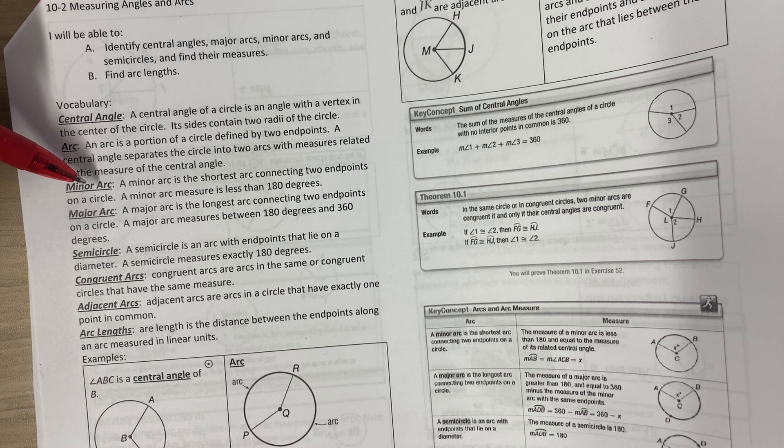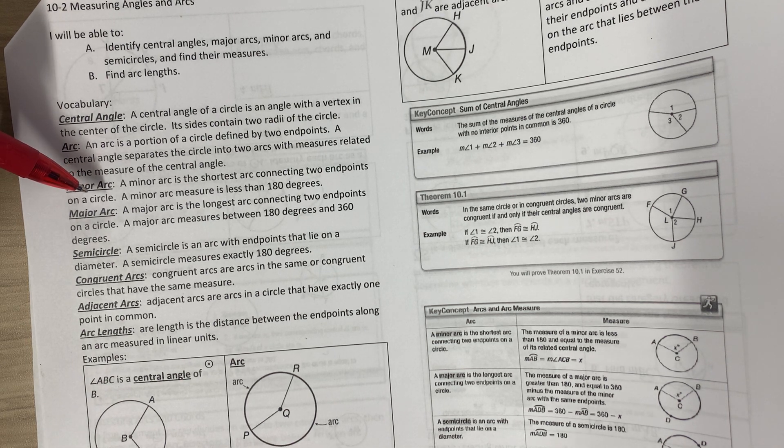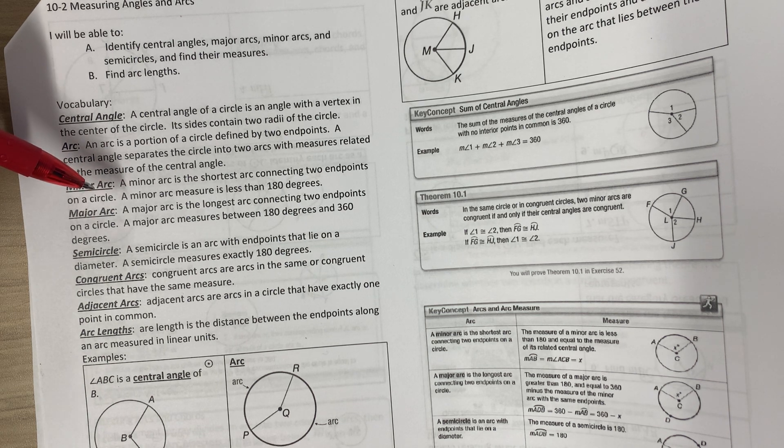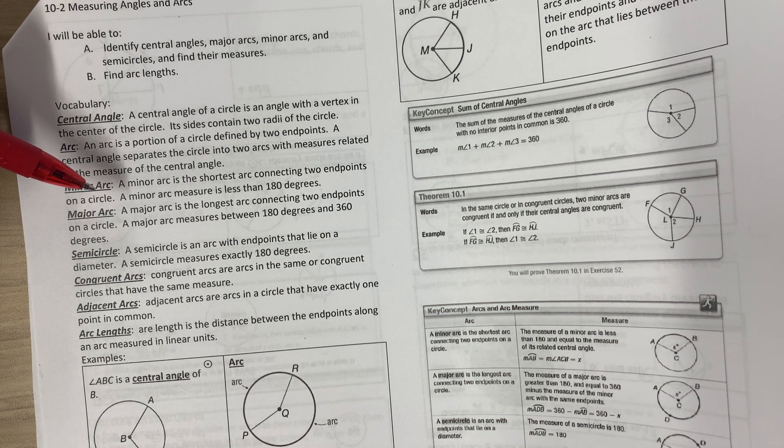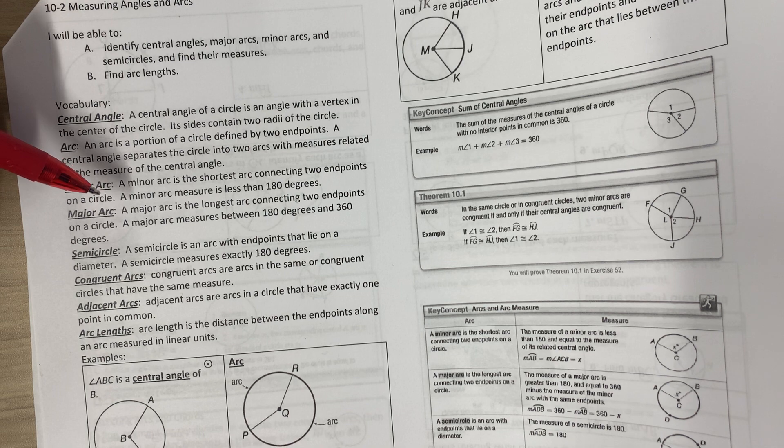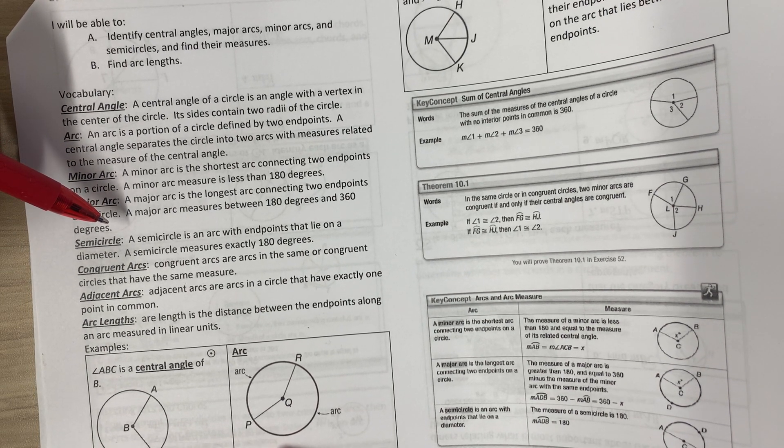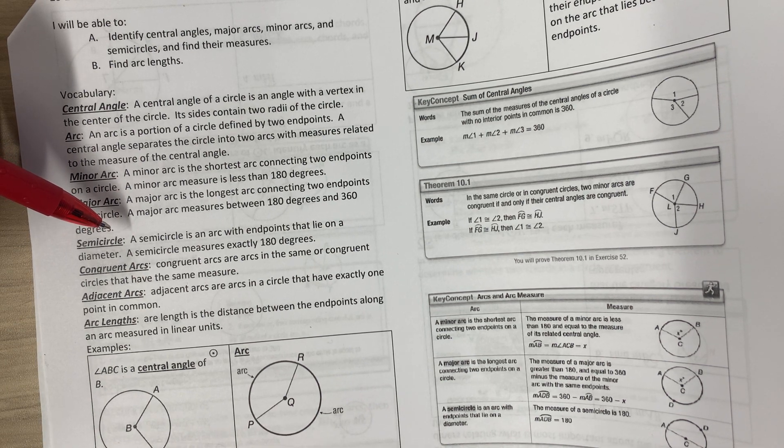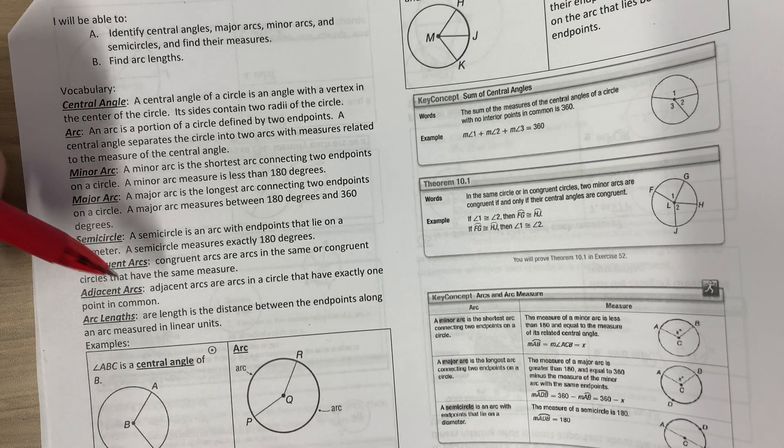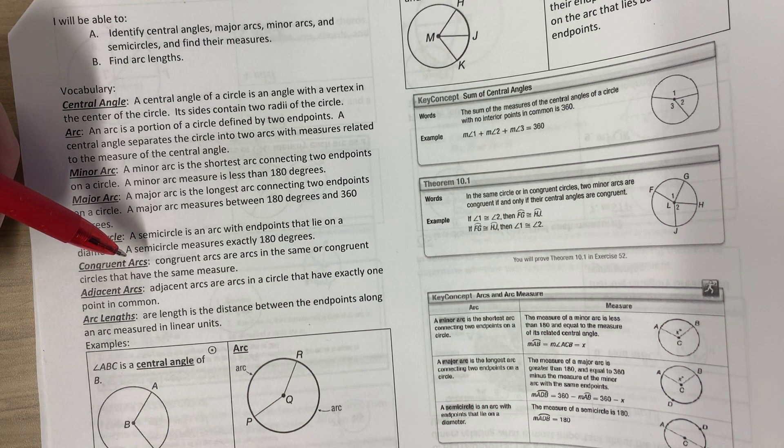A minor arc is the shortest arc connecting two endpoints on a circle. A minor arc measure is less than 180 degrees. A major arc is the longest arc connecting two endpoints on a circle. A major arc measures between 180 and 360 degrees. A semicircle is an arc with endpoints that lie on a diameter, so a semicircle measures exactly 180 degrees. Congruent arcs are arcs in the same or congruent circles that have the same measure.